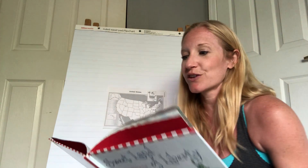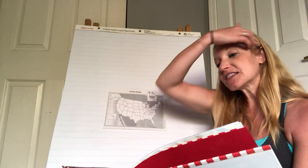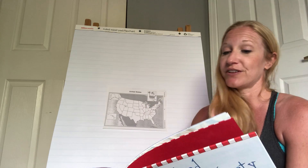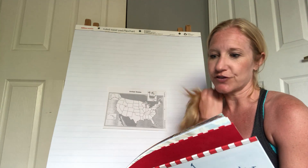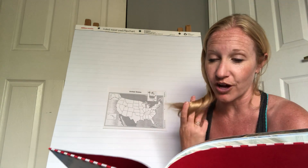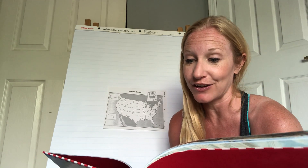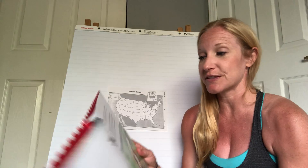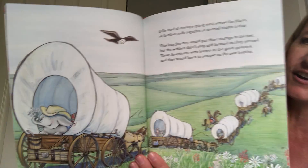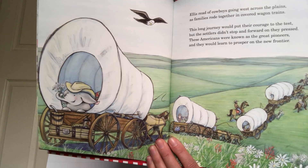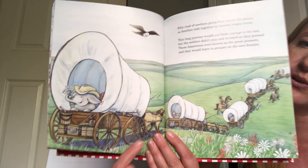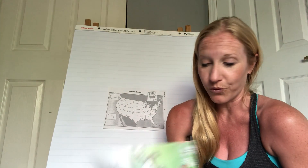Ellis read of cowboys going west across the plains as families rode together in covered wagon trains. This long journey would put their courage to the test, but the settlers didn't stop and forward on they pressed. These Americans were known as the great pioneers, and they would learn to prosper on the new frontier. This is also what it looked like for many families as they traveled to California to try and find gold.